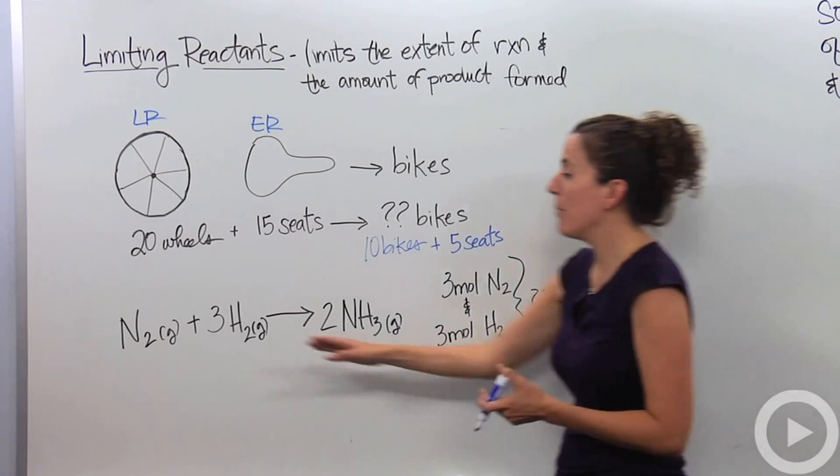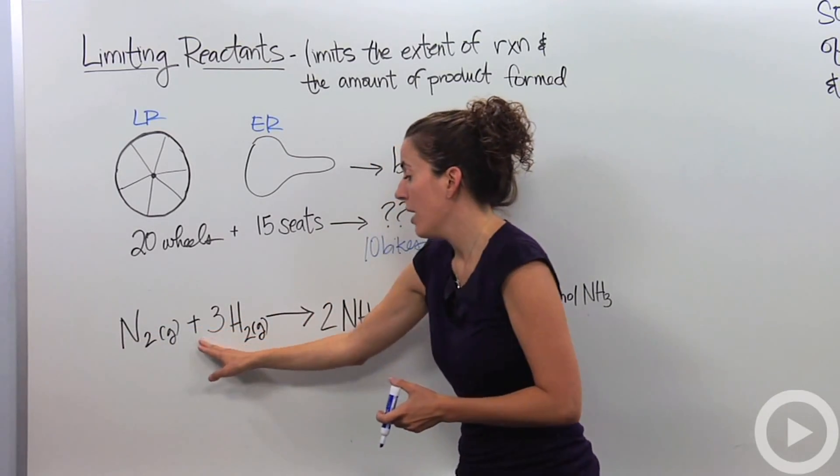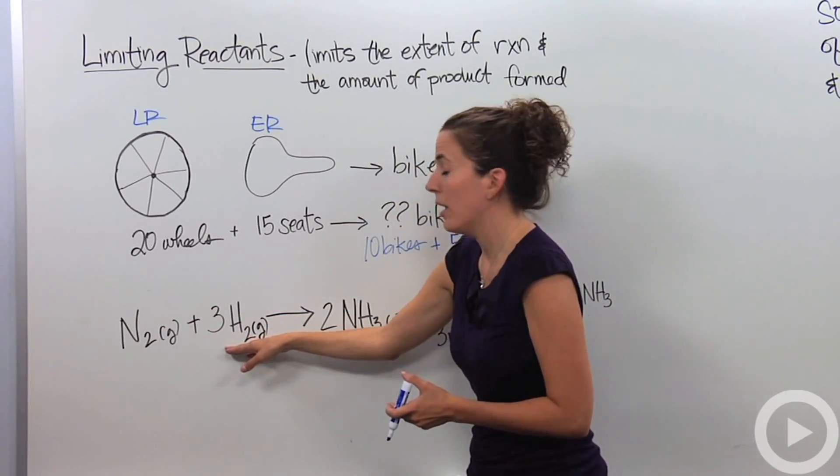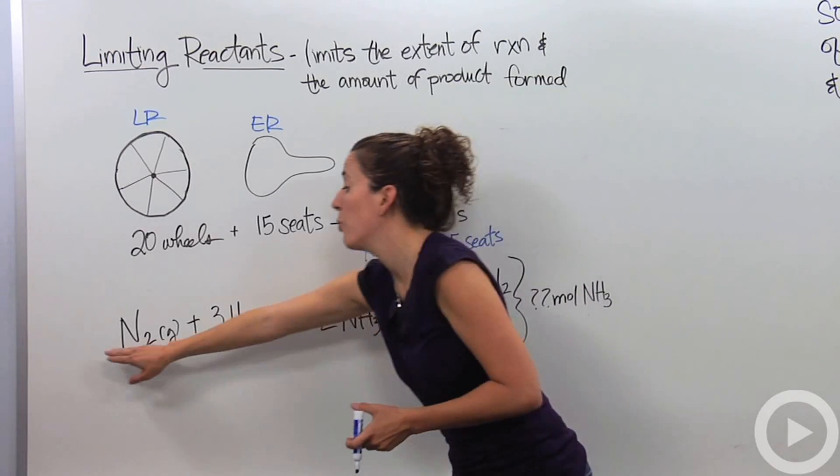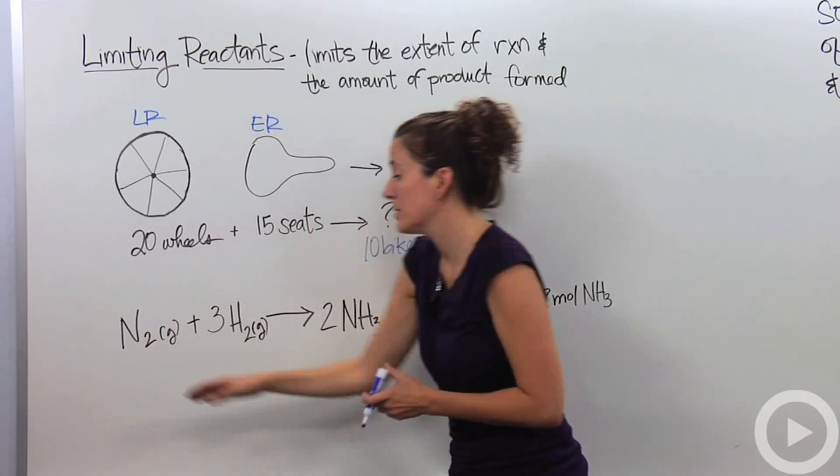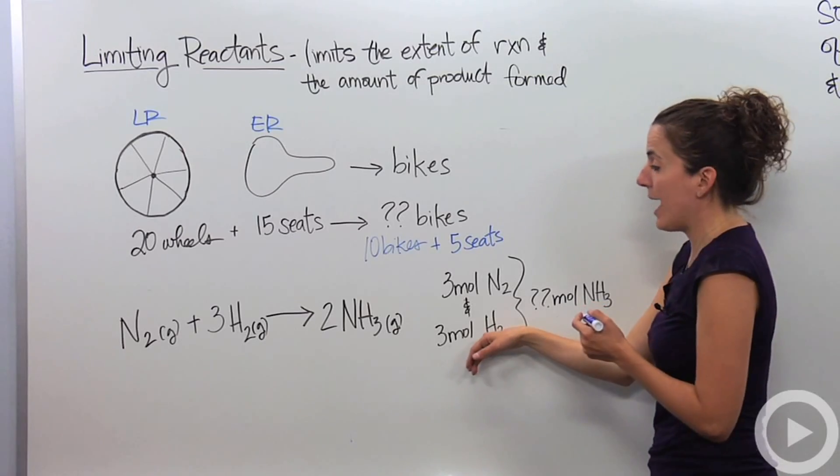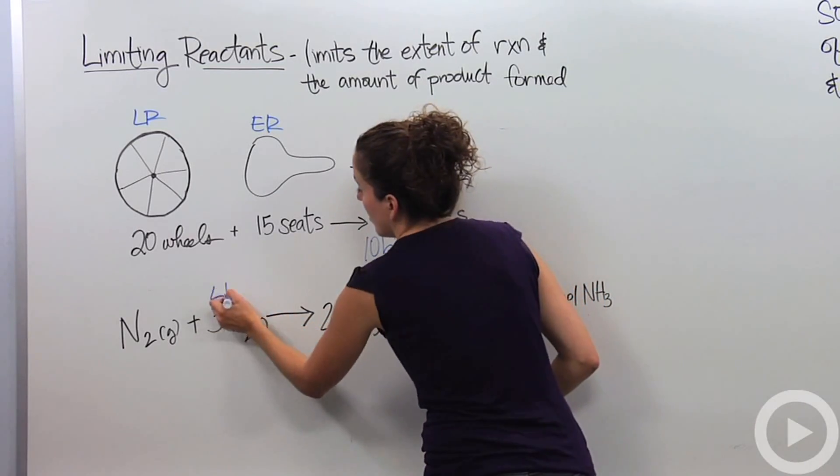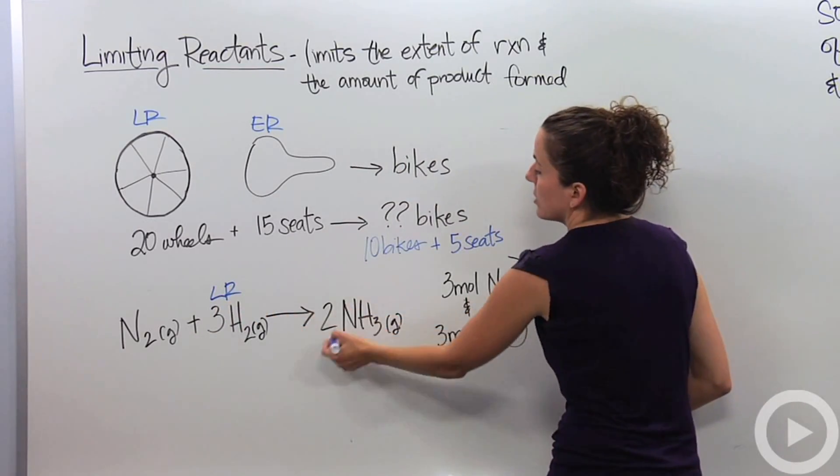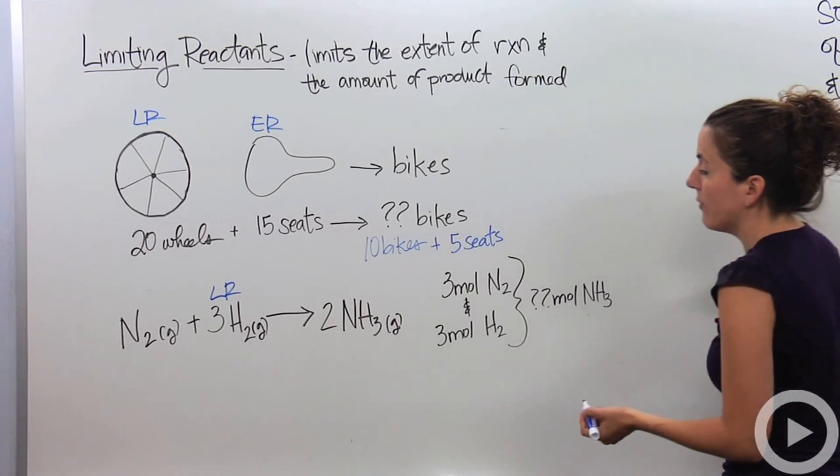Well, I know right away, looking at my mole ratios, one to three, I'm going to use my three moles of hydrogen molecules right away with one mole of nitrogen molecules. So, I'm limited by the amount of hydrogen. So, this is going to be my limiting reactant. I'm only able to make two moles of ammonia.